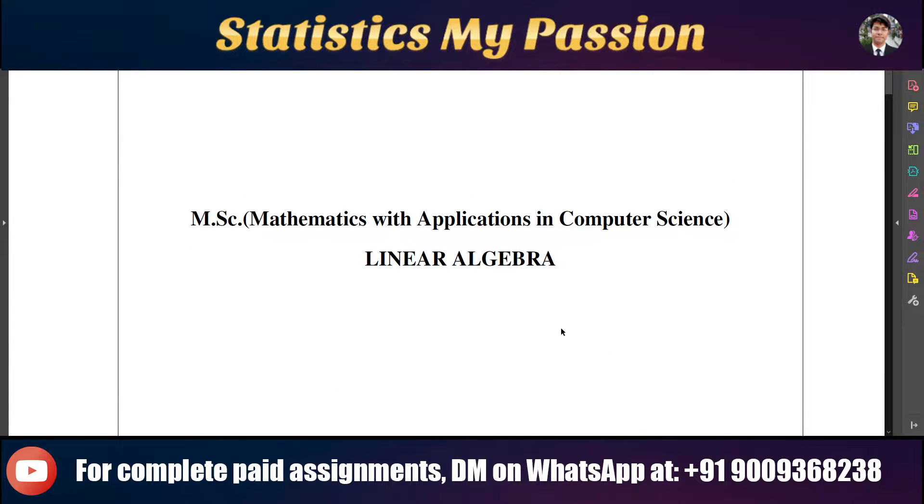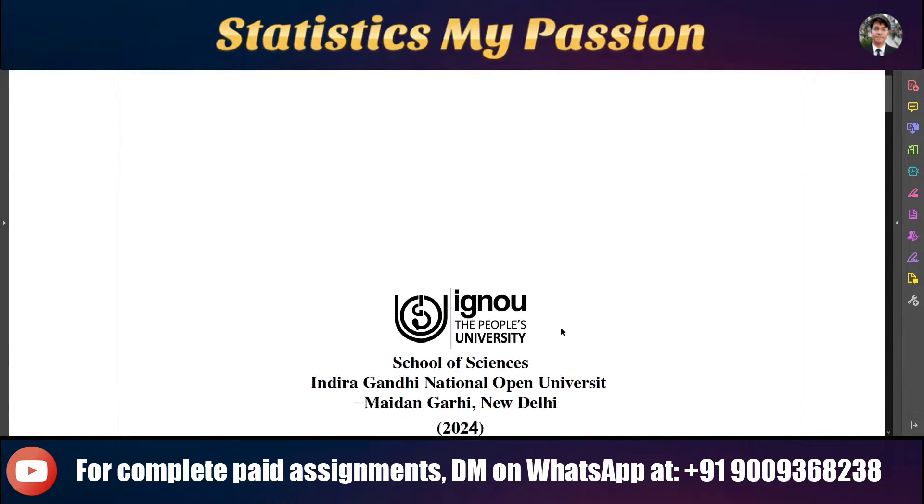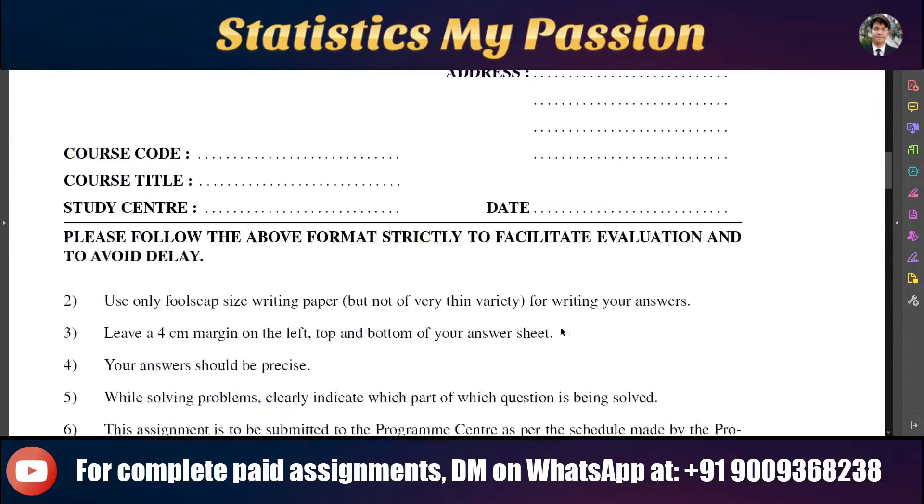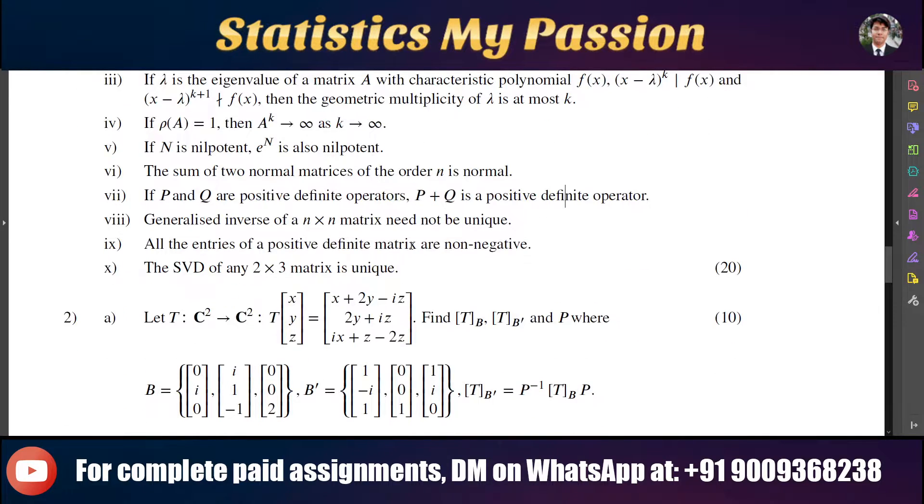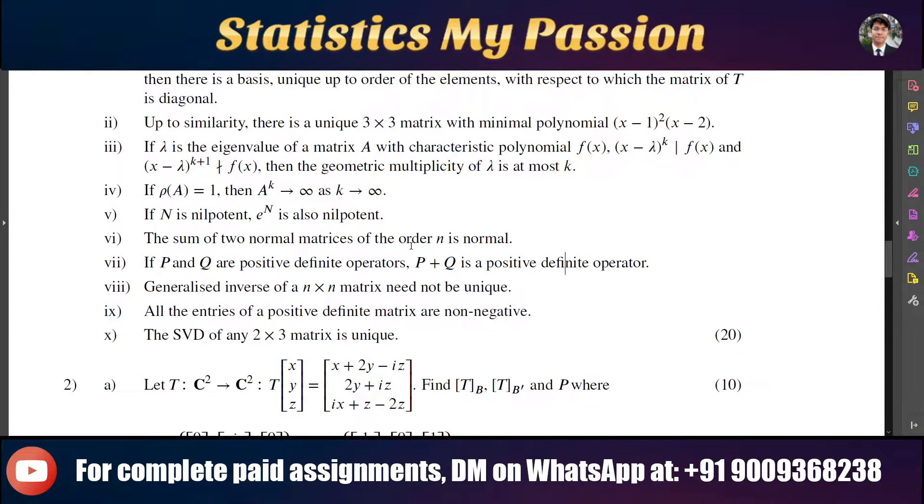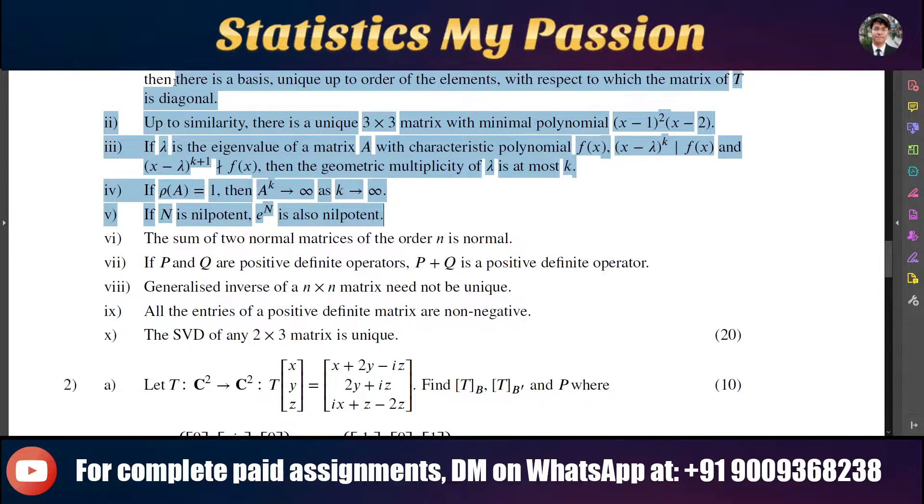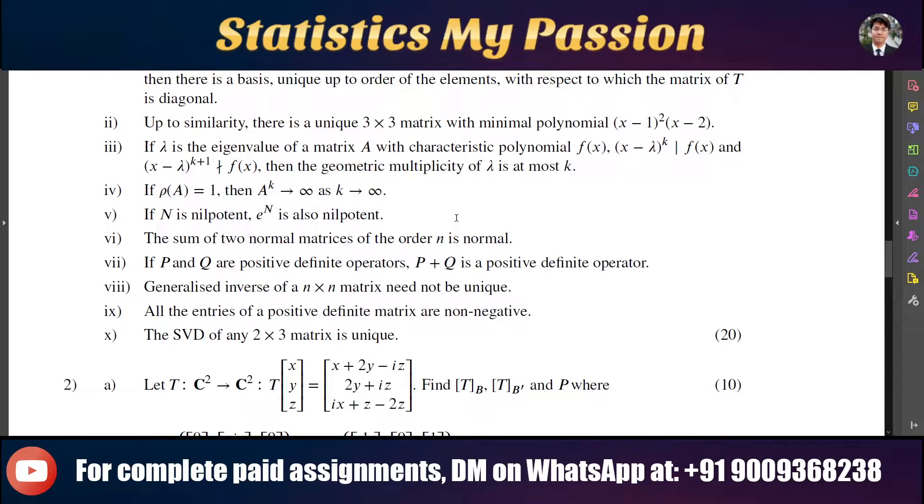This is the code for linear algebra. The first question asks which of the following statements are true and which are false, and to give reasons for your answers. In this question, we have ten statements total. I am showing the answers to the first five questions in this video.